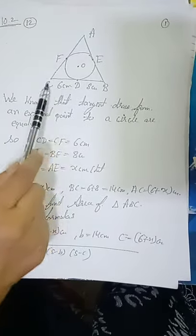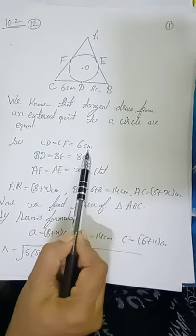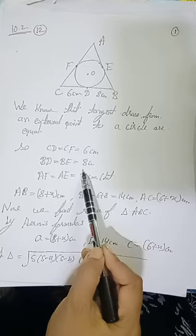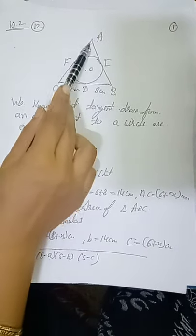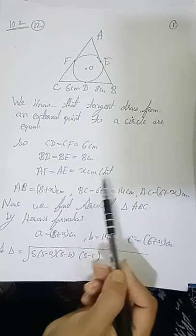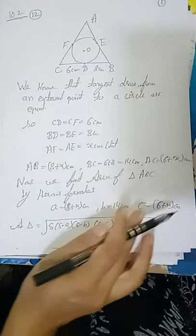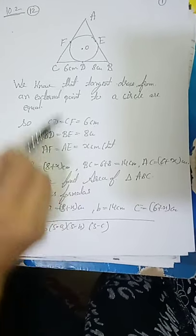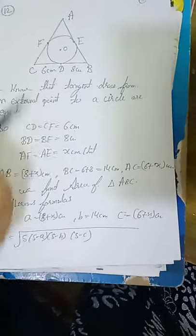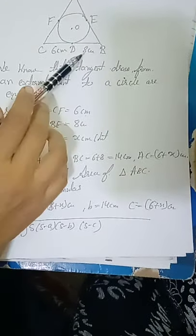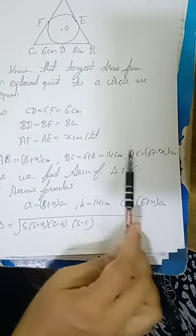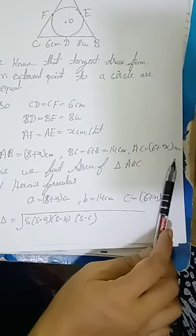So CD equal to CF equal to 6 cm, BD equal to BE equal to 8 cm, and AF equal to AE equal to x cm. Now AB equal to 8 plus x, BC equal to 6 plus 8 which is 14, and AC equal to 6 plus x.